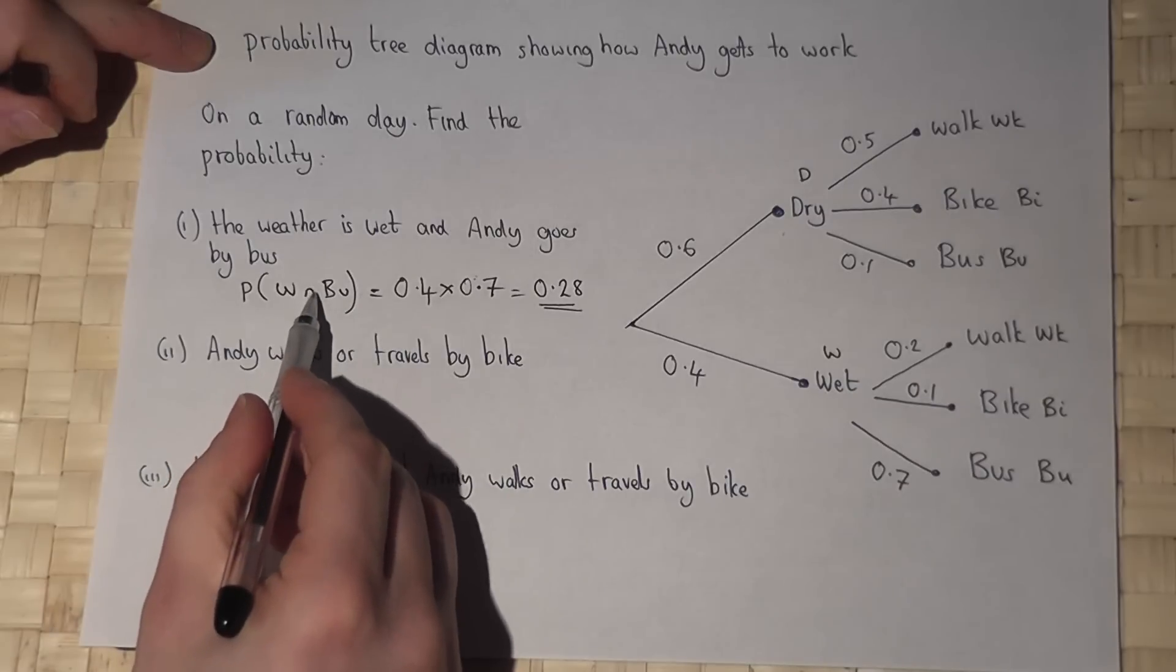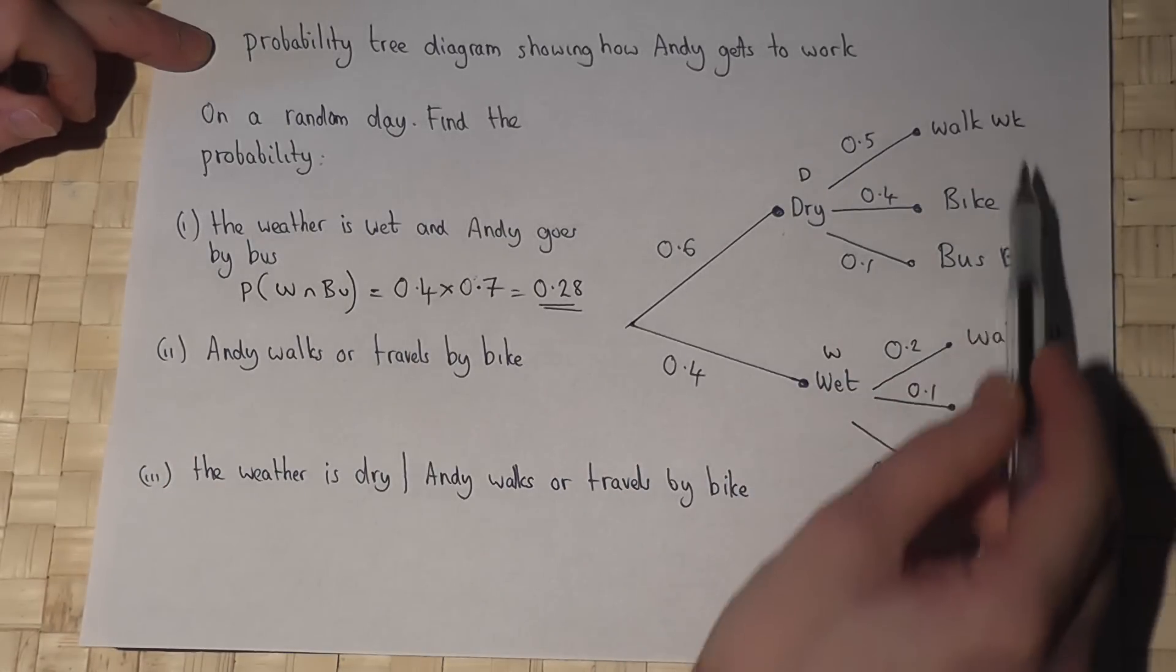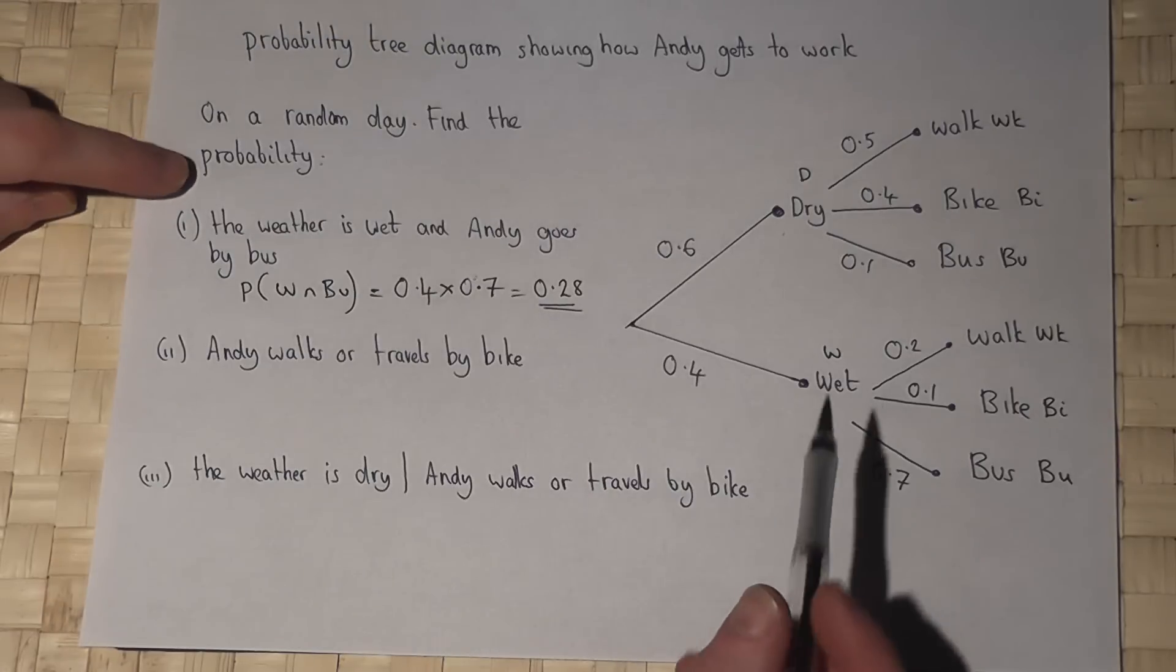This symbol here means and, and I've abbreviated dry, wet, walk, bike, and bus using these shorthand abbreviations.